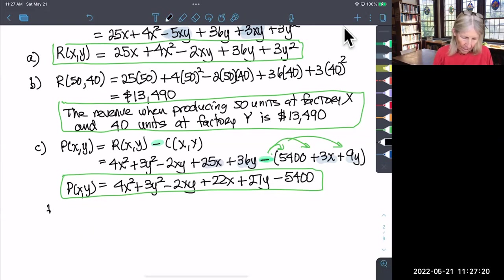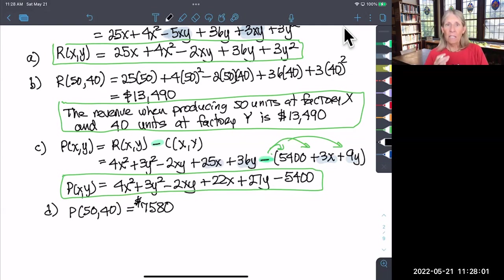The last part of this problem asks us to take the profit function and plug in 50 and 40 to see what that represents. When you plug 50 and 40 into the profit function, you get the profit when producing 50 units at factory X and 40 units at factory Y. Take a minute to plug those in. You should end up with $7,580. That is our profit when we sell 50 units from factory X and 40 units from factory Y. I hope this has been helpful.